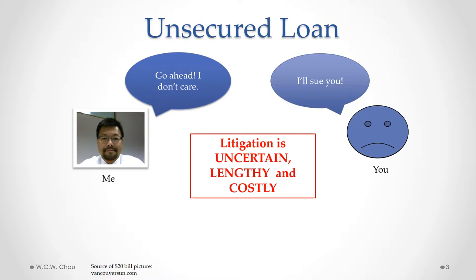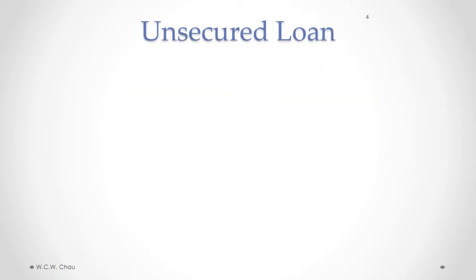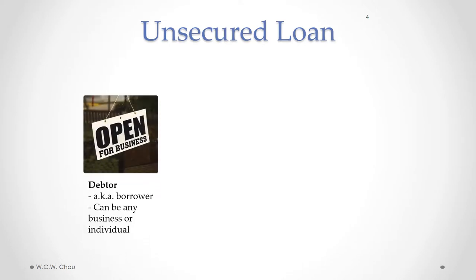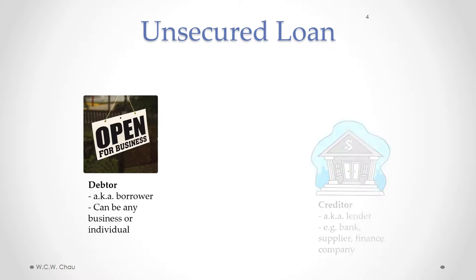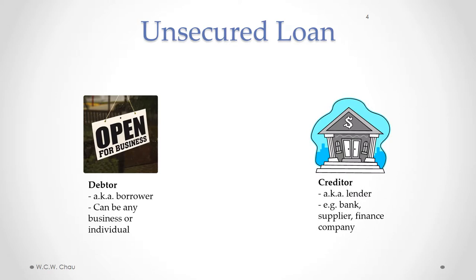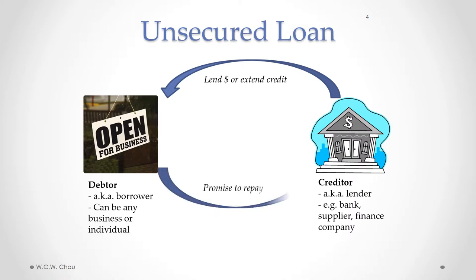Litigation is also costly, especially if you've hired a lawyer to assist you in your case, so there will be significant legal fees involved. Here's a more general description of an unsecured loan: we have a debtor — also known as the borrower — who can be any business or individual. The creditor, also known as the lender, could be a bank, a supplier selling to you on credit, or a finance company. With a non-secured loan, money is lent or credit is extended from the creditor to the debtor, and the debtor makes a promise to repay. On default, the creditor may sue the debtor to try to recover the money loaned.